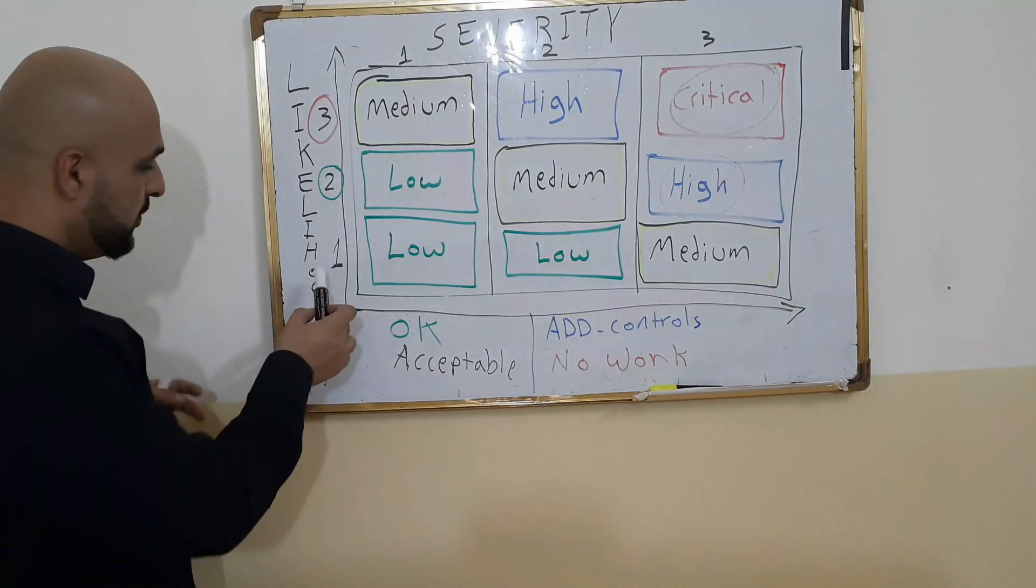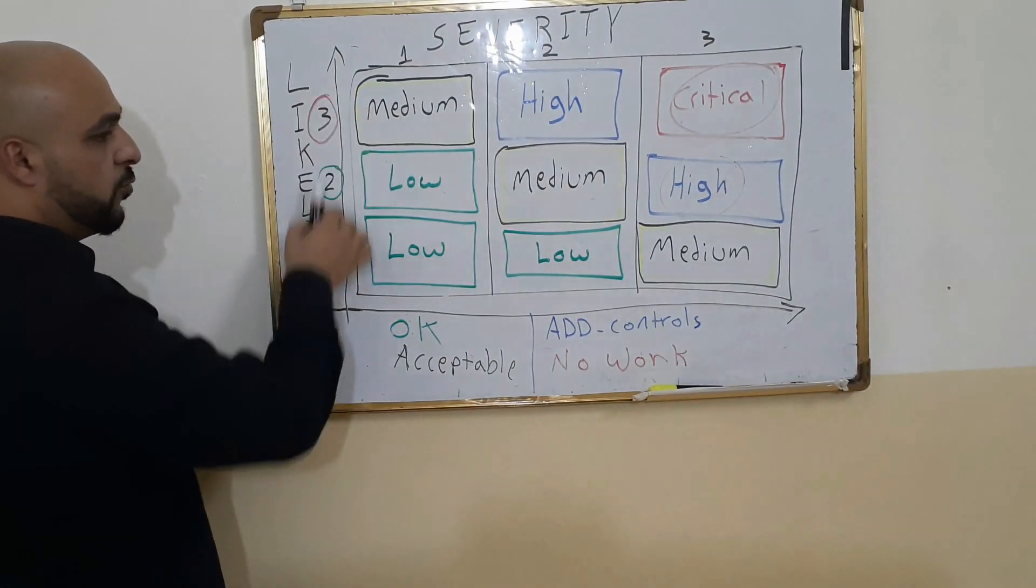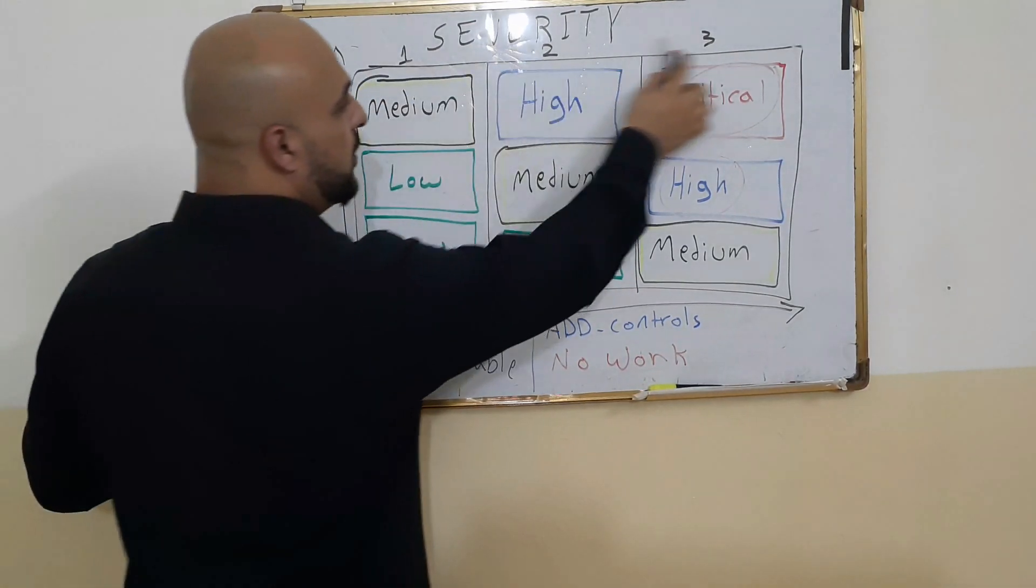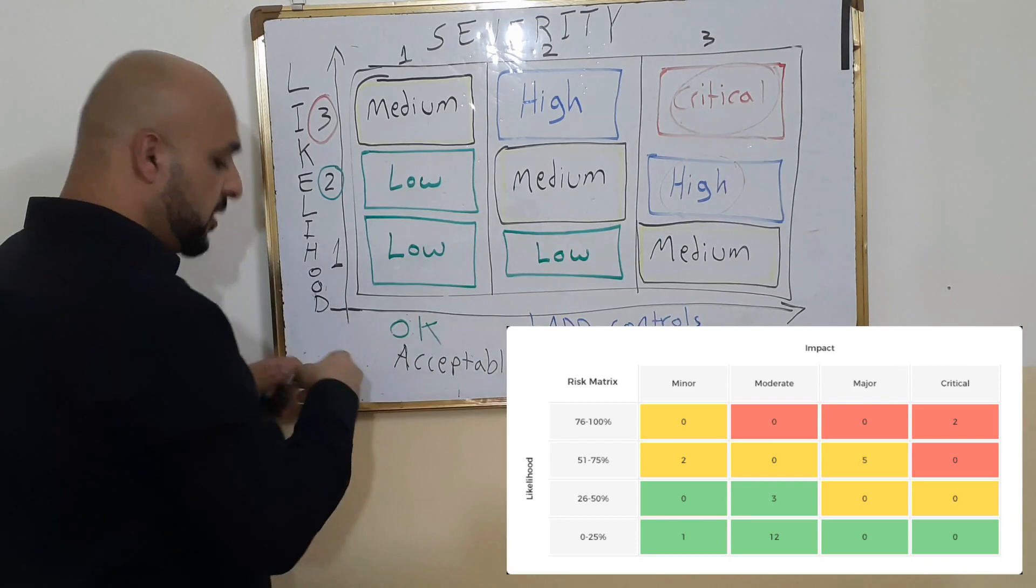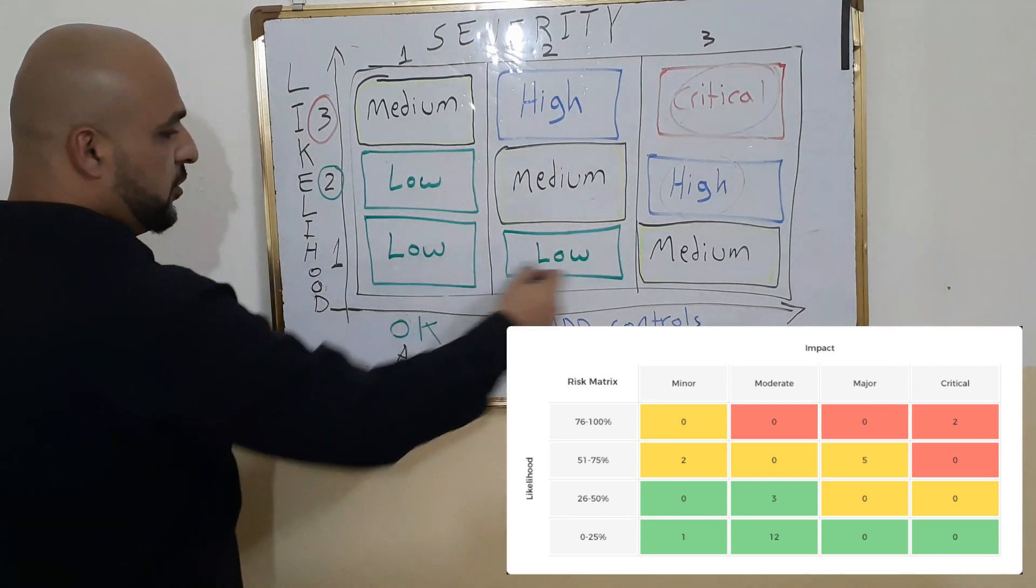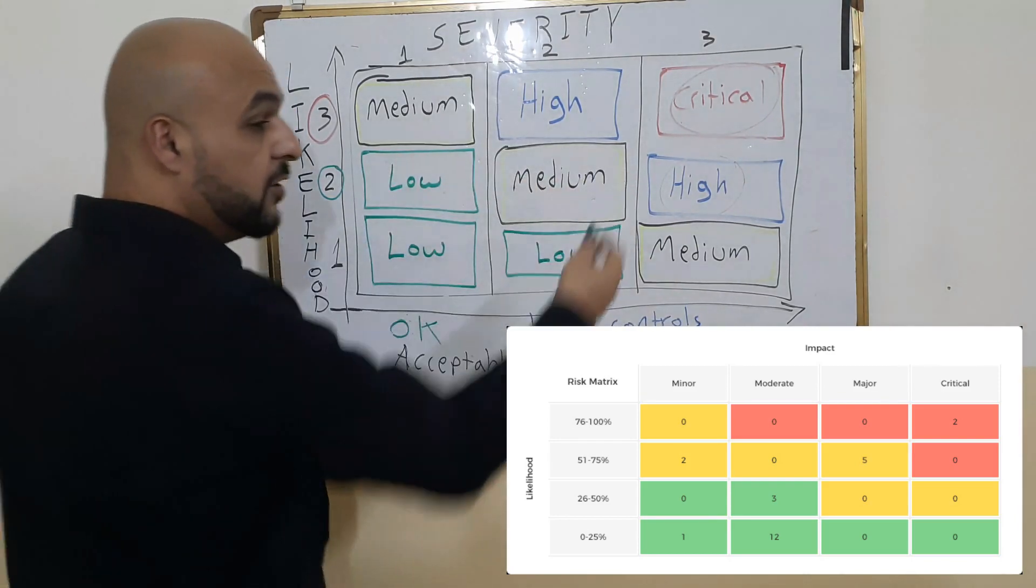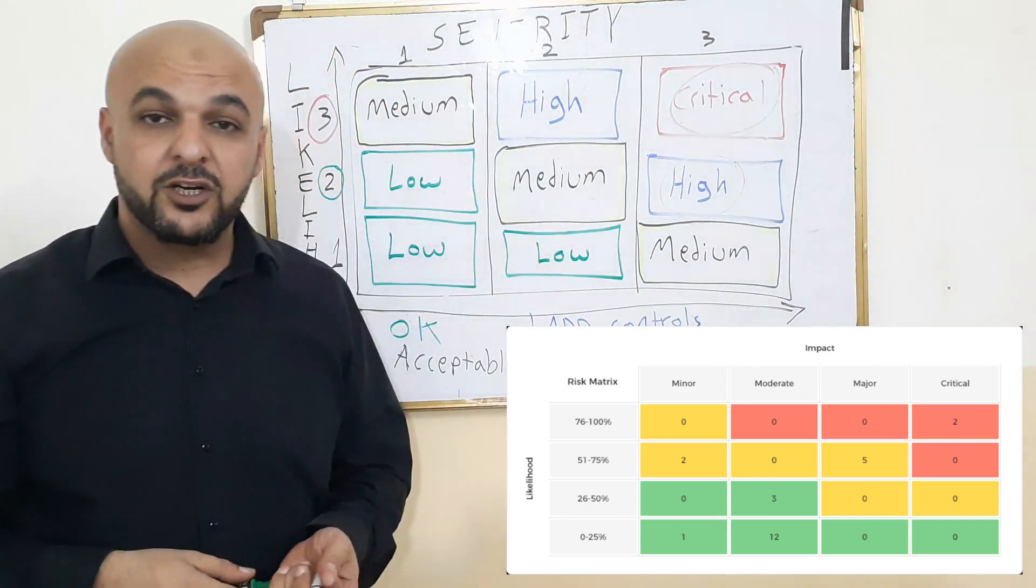All of them will have here the likelihood or probability, the severity, and maybe you'll have different colors. Maybe you have numbers here. Maybe you'll have one, two, three, two, three, whatever. Maybe you have numbers in there. It doesn't matter.